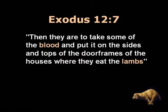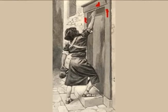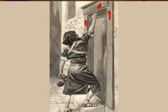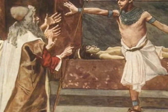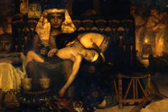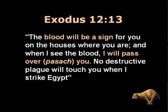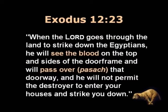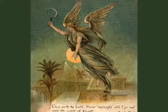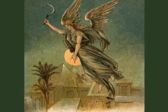Exodus 12:7: Then they are to take some of the blood and put it on the sides and tops of the door frames of the houses where they eat the lambs. Then during the night the angel of death passes through Egypt, slaying the firstborn of both men and animals to bring judgment on Pharaoh and the gods of Egypt. Exodus 12:13 reads: The blood will be a sign for you on the houses where you are. And when I see the blood, I will pass over you. No destructive plague will touch you when I strike Egypt. Verse 23: When the Lord goes through the land to strike down the Egyptians, he will see the blood on the top and sides of the door frame and will pass over that doorway, and he will not permit the destroyer to enter your houses and strike you down.